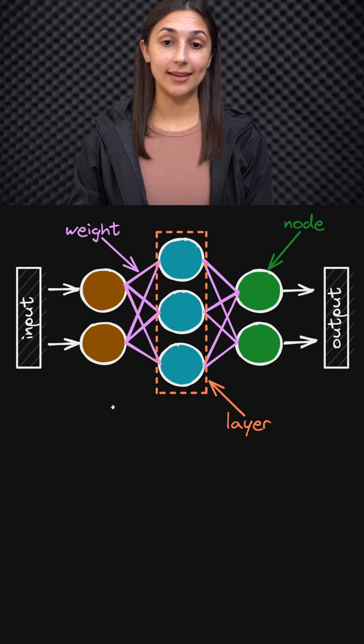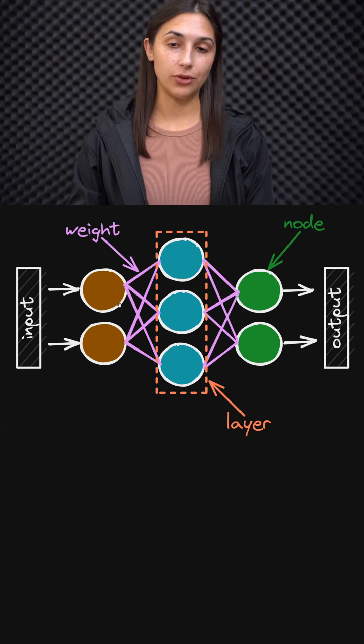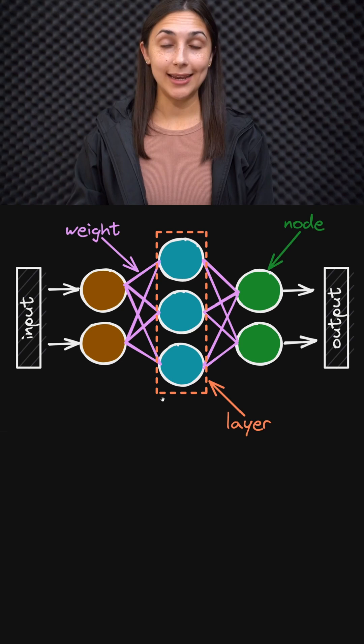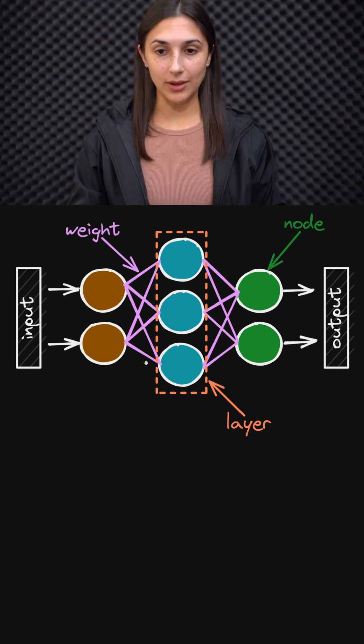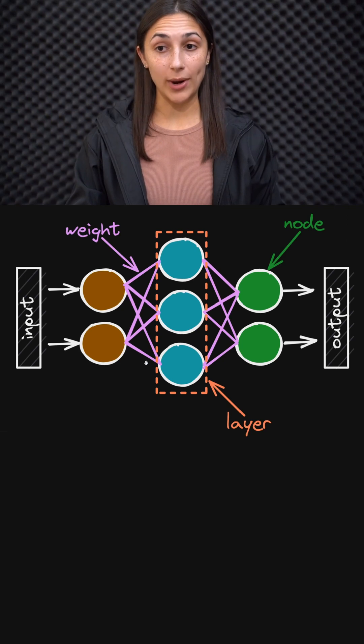So here we have this sample network that accepts input with two input features and has a single hidden layer, as well as an output layer with two possible output classes. As we know, any given layer is going to contain some number of nodes, but how many nodes it will contain depends on where the layer falls exactly.